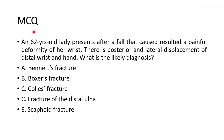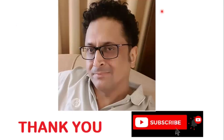For the learners, here is an MCQ: A 62-year-old lady presents after a fall that resulted in a painful deformity of her wrist — posterior and lateral displacement of the distal wrist and hand. What is the likely diagnosis? A) Bennett's fracture, B) Boxer's fracture, C) Colles' fracture, D) Scaphoid fracture. Leave your answer in the comments. Thank you very much for being tuned in — if you like the channel, please subscribe.